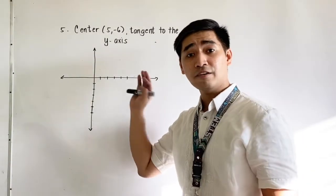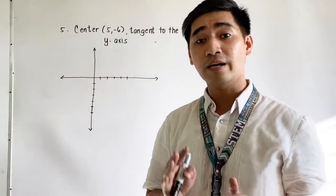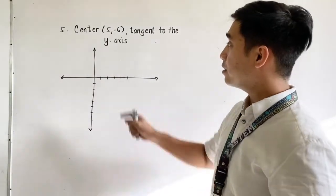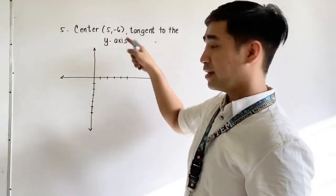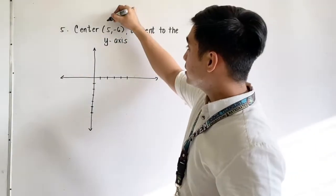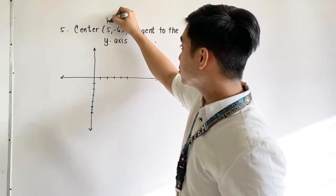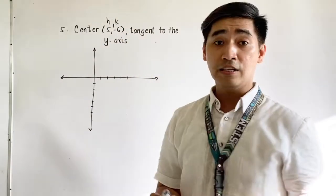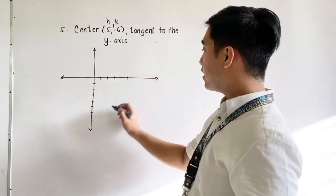If we're given this kind of problem, all we have to do is to graph the center first. So in graphing the center, we are given 5 and negative 6. This is the x value and this is the y value, and that also satisfies as h and k. So 5 and negative 6.